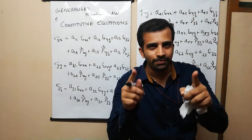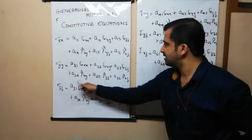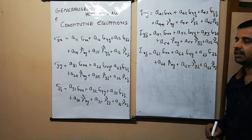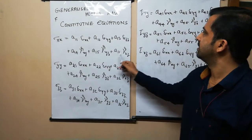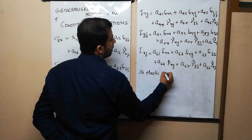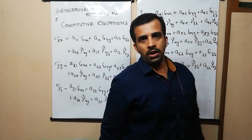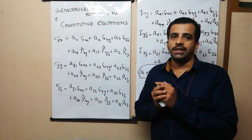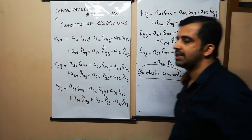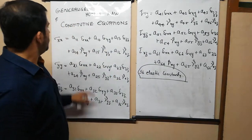Now I have related all six stress components to all six strain components. For this relationship, a minimum of 36 elastic constants are required — a 6-by-6 matrix giving 36 constants. These 36 elastic constants are required to describe the material property at a point on a body, or to describe the stress-strain relationship at a point.